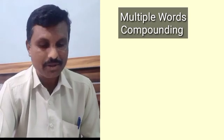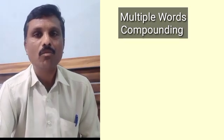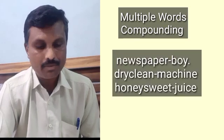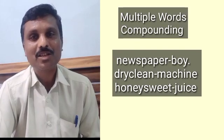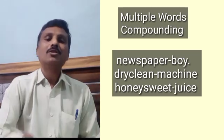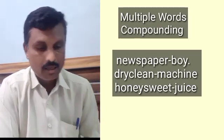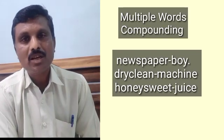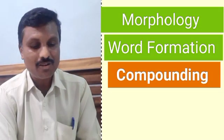There is also a miscellaneous process where multiple words compound together. For example, 'newspaper boy' consists of three independent morphemes combined. 'Dry clean machine' adds 'machine' to the existing compound 'dry clean'. This process — combining two, three, or four words together — is called multiple-word compounding. For instance, 'honey sweet juice' means juice that is sweet like honey.